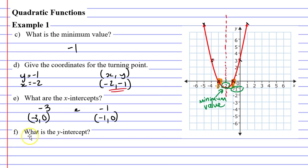Finally, question F, it's asking us for the y-intercept, which is just where it crosses the y-axis. We can see it here at the number 3.